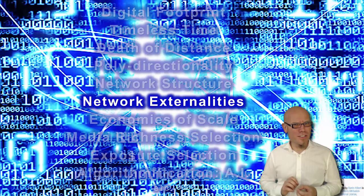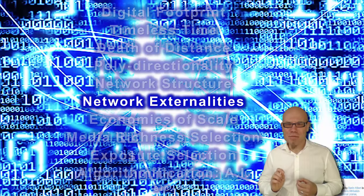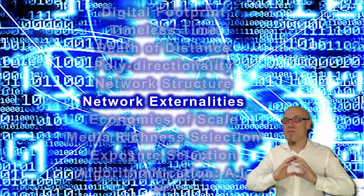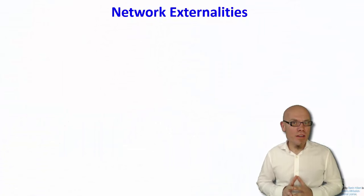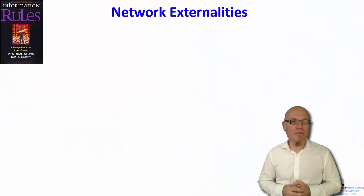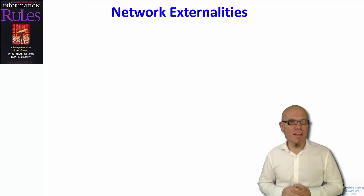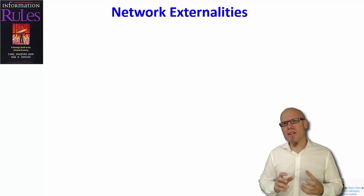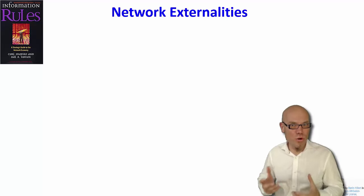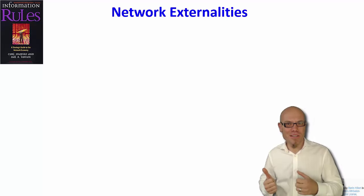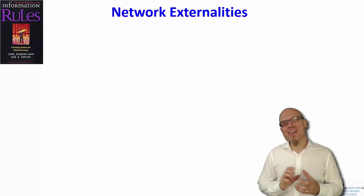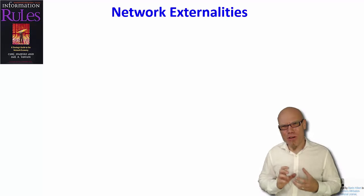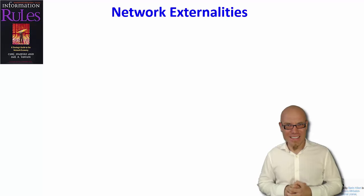One of the most subtle characteristics of digitalization are so-called positive network externalities — but as subtle as it is, it has very far-reaching consequences. Shapiro and Varian, both at the time professors at the University of California at Berkeley, wrote a seminal book called Information Rules — a play on words between 'rules of information' and 'information rules' — where they talked a lot about the important role of network externalities.